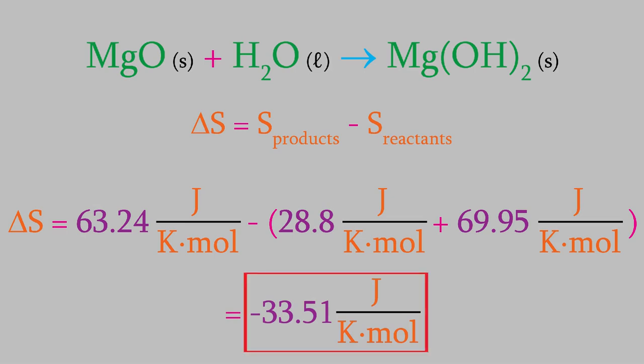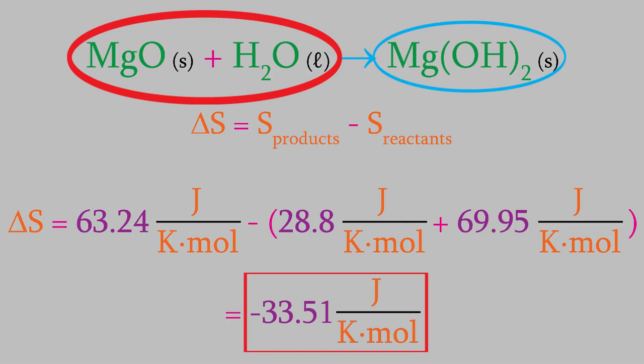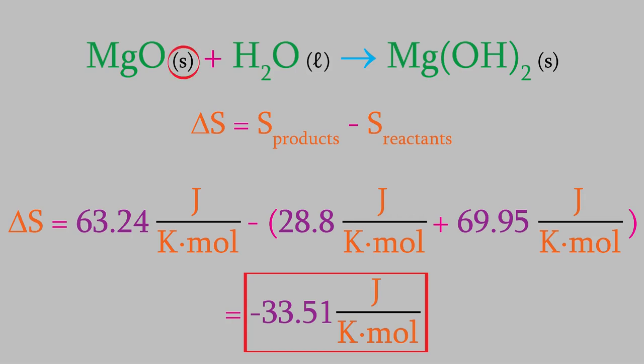Notice that the entropy is a negative number. That means that the amount of disorder is decreasing. That makes a lot of sense. If you look at the reaction, we started with two compounds and ended with just one. As a result, we'd expect the amount of disorder to decrease. Also, notice that we started with a solid and a liquid, and we ended with just a solid. That's another reason we'd expect the disorder to decrease. And that's exactly what we got from our calculation.